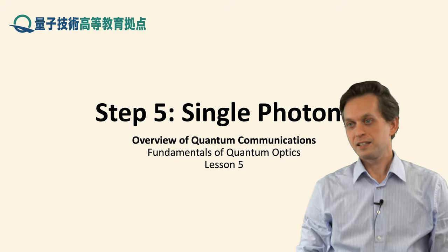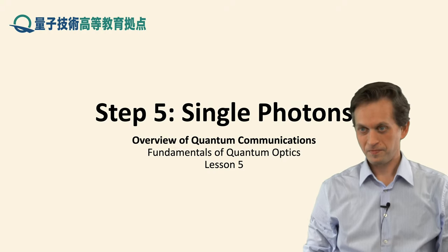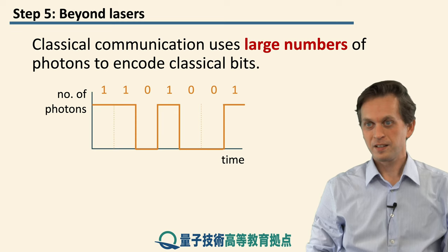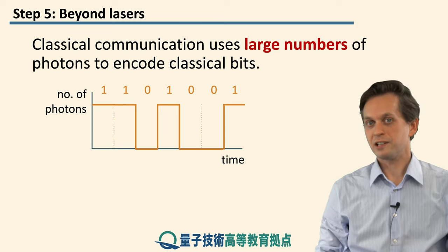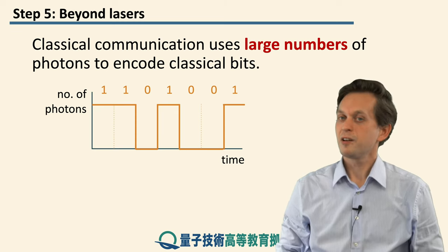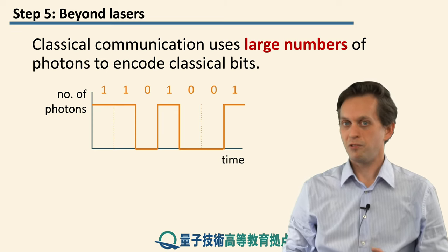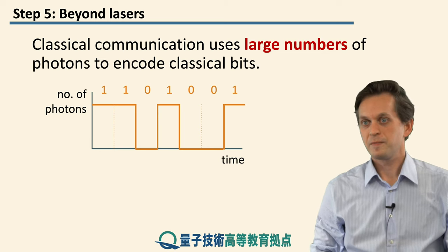Step 5: Single photons. So we have seen how to generate light in an incoherent state, and we have seen how to generate light in the coherent state.